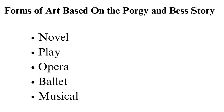Furthermore, many jazz musicians have created their own versions of the Porgy and Bess songs in the opera, musicians like John Coltrane, Ella Fitzgerald, and Miles Davis. Here is a list of some of the famous Porgy and Bess films. The 1959 Porgy and Bess film is the most popular form of art that revolves around this story. This is the primary reason this article focuses on this film.